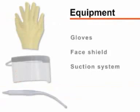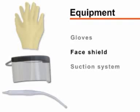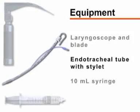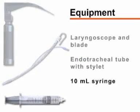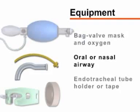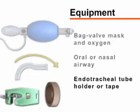Begin by gathering the required equipment. You will need gloves, a protective face shield, and a working suction system, a laryngoscope with appropriate blade, an endotracheal tube with stylet, and a 10 milliliter syringe. You will also need a bag valve mask attached to oxygen, an oral or nasal airway, and tape or an endotracheal tube holder.